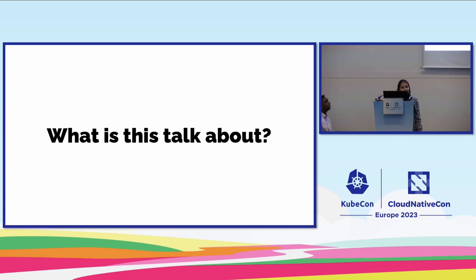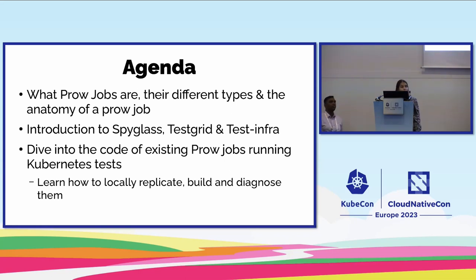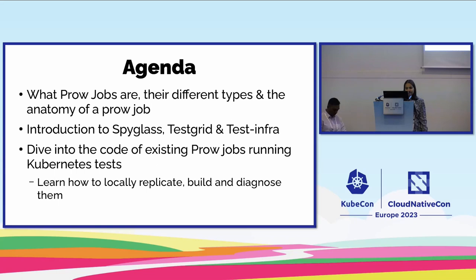We have divided our talk into three parts. We'll be discussing what Prow jobs are and the different types, and we'll go into the anatomy of Prow jobs. We'll also look at the various user interfaces to read and go through Prow jobs and where the config sits. And we'll end with looking at a few examples of actually running Kubernetes Prow jobs and how to replicate them locally.